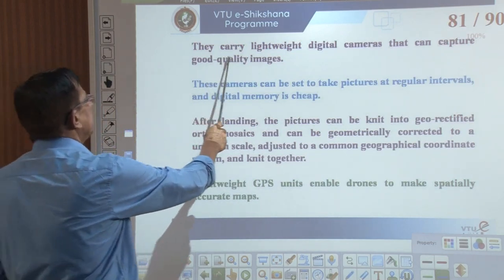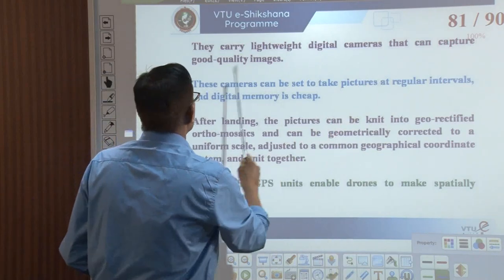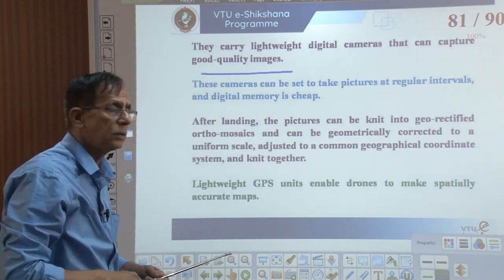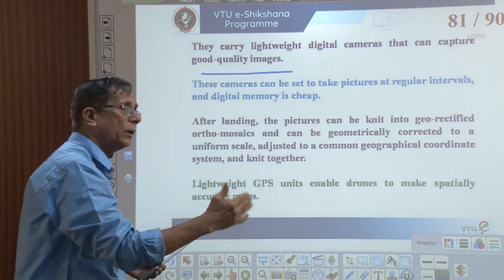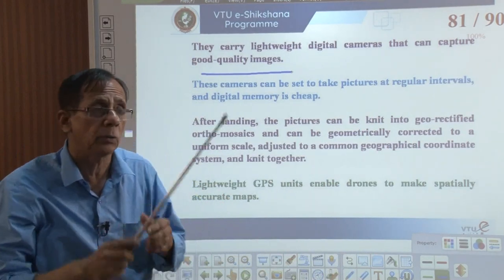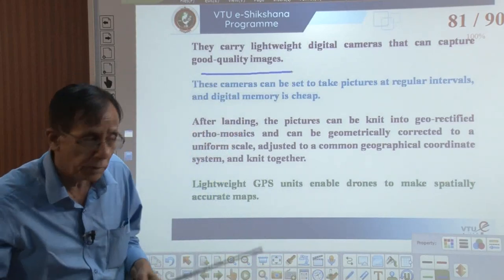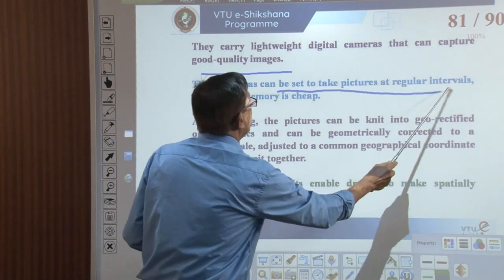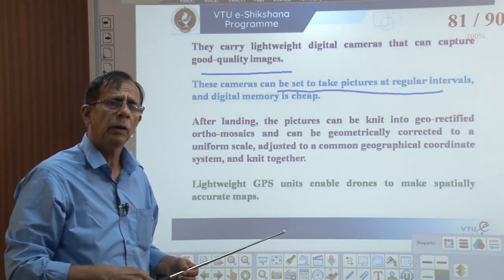Drones carry lightweight digital cameras that can capture good quality images of the ground. This camera can be set to take pictures at regular intervals. As in the flight plan, I can control the exposure interval — every one minute, every three seconds, or whatever interval I require. I can program it to take photographs at regular intervals, and it is stored in digital memory on a chip.